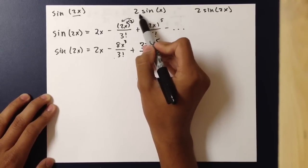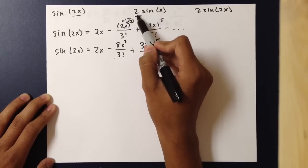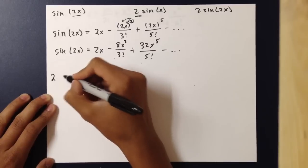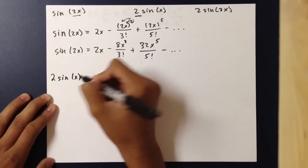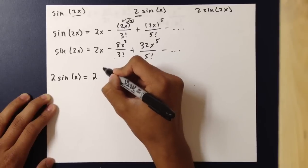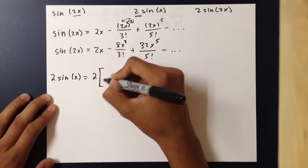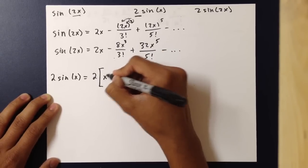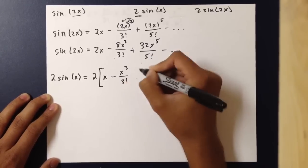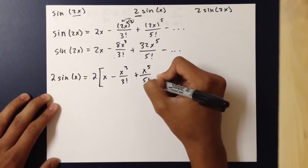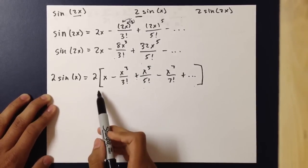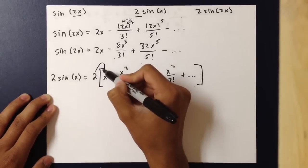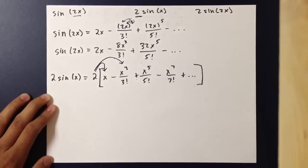Now, what if they ask you to multiply 2 by sine of x? Since it's not multiplying inside with x, we take 2 and multiply it by the whole Taylor polynomial. So it would just be 2 times the Taylor polynomial of sine of x: x minus x cubed over 3 factorial, plus x to the fifth over 5 factorial, minus x to the seventh over 7 factorial, and so on. You could just distribute 2 out to each term. This can also be done with subtraction, addition, and division.